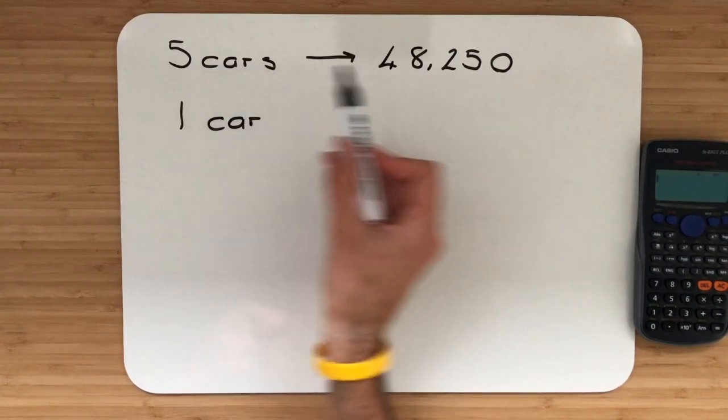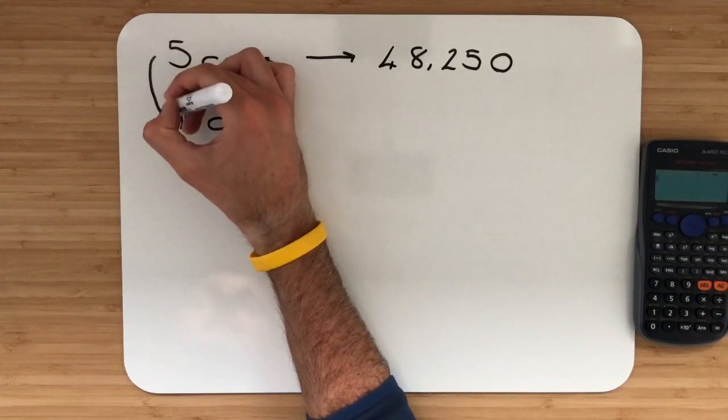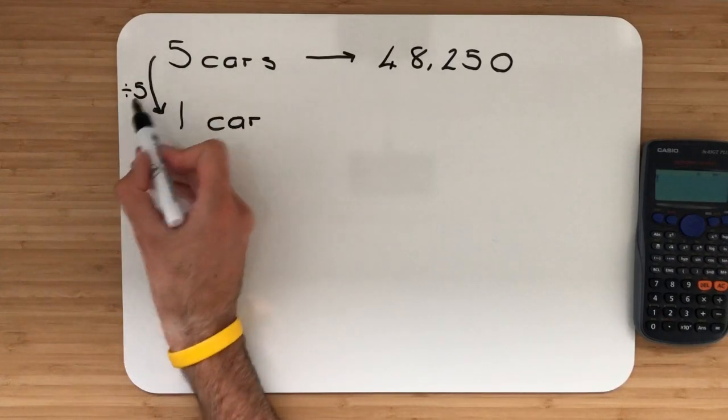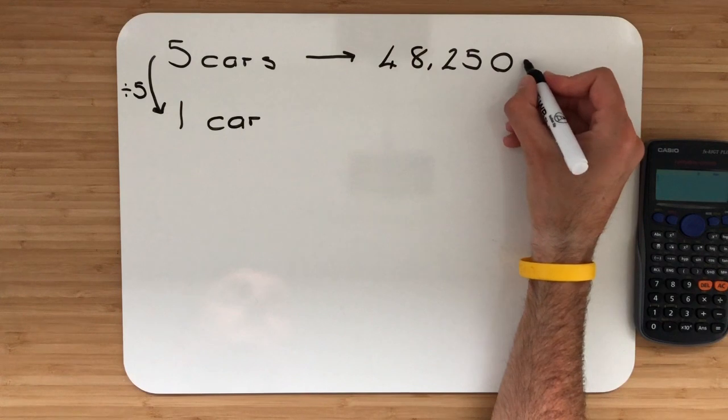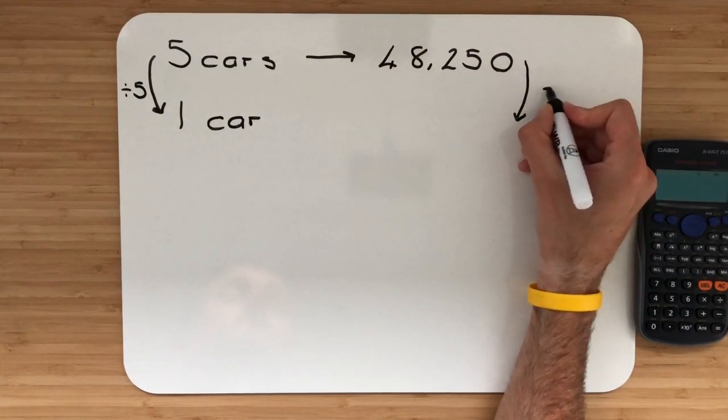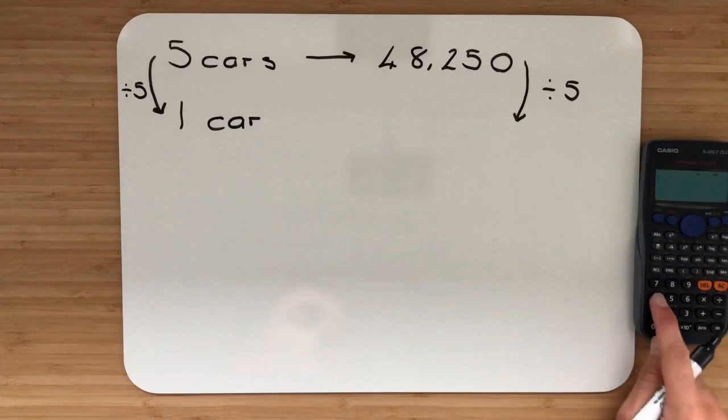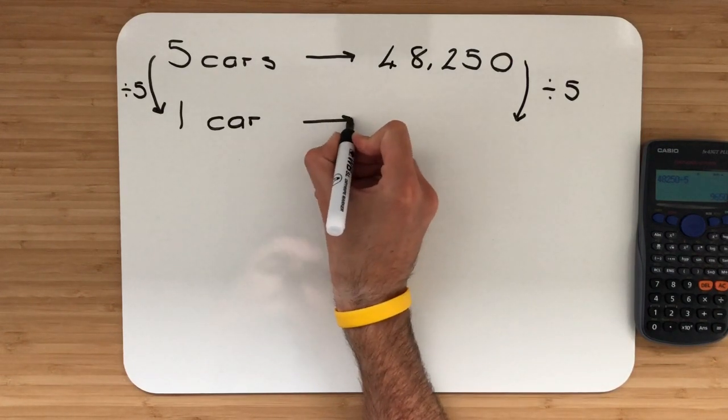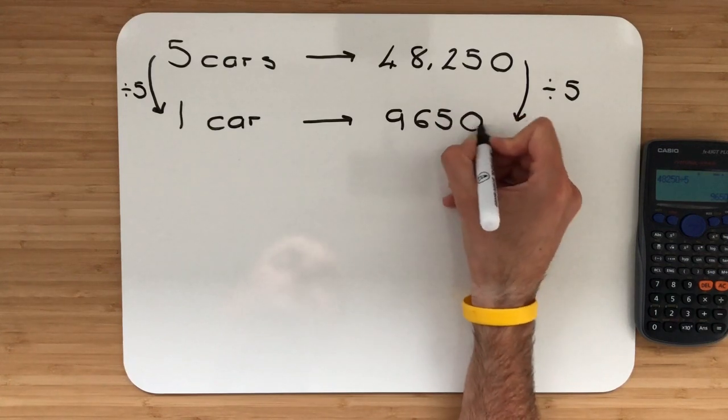So five cars cost £48,250. If I want to find the value of one I'm just going to divide by five. Five divided by five gives me one. Whatever I do to the left I'm going to do the exact same thing to the right so I'm going to divide this by five. So we've got 48,250 and I'm going to divide by five. So the value of one car will be £9,650.